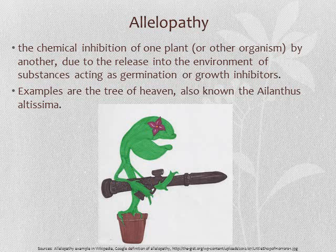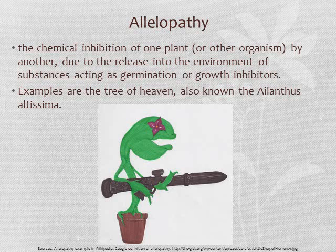Allelopathy is where an organism makes biochemicals that influence the growth, survival rate, and reproduction rate of other organisms. This definition is relatively simple when you have an example, such as the tree of heaven. In its roots, it can produce allelochemicals that play a crucial role in the growth of many other plants.